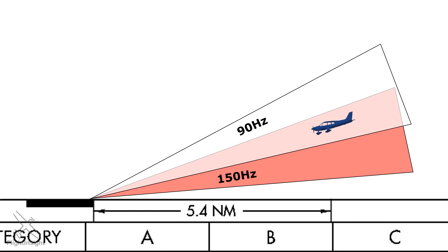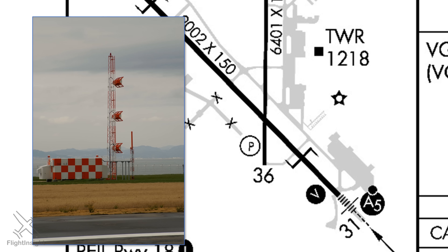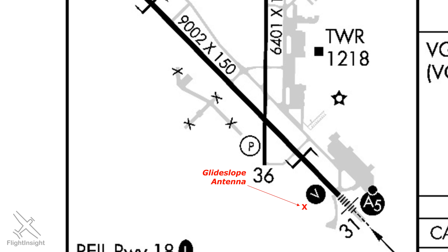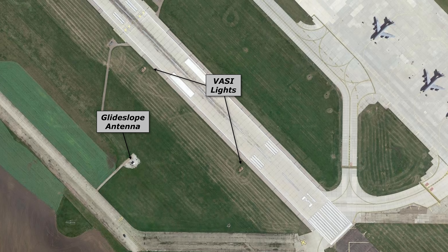So when our equipment on board picks up both signals perfectly overlapped, it'll indicate to us that we're centered on the approach. Too much of the 90 Hz signal will indicate too high, and too much of the 150 Hz will indicate too low. These transmissions originate from a series of antennas situated at the side of the approach end of the runway. They're right next to the VASI lights, indicated by the V in the black circle, which makes sense because they're doing basically the exact same job. If we look at a satellite image of this runway, we can see exactly where these are — here's the glide slope antenna, right in the middle of the two VASI lights.